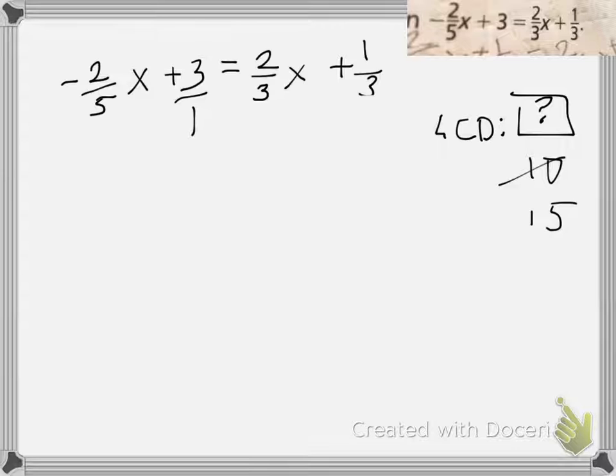Now that we figured out our LCD is 15, we're going to convert all of them into the lowest common denominator. How do I get 15 in the five? We have to multiply by three. What you do to the bottom, you have to do to the top. Here, we multiply by 15. And here, how do I get 15? Multiply by five. What I do to the bottom, I have to do to the top. This is the easiest way to do it.